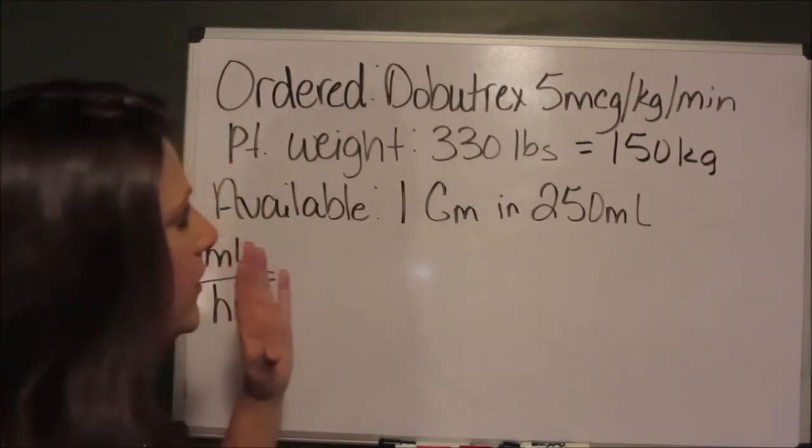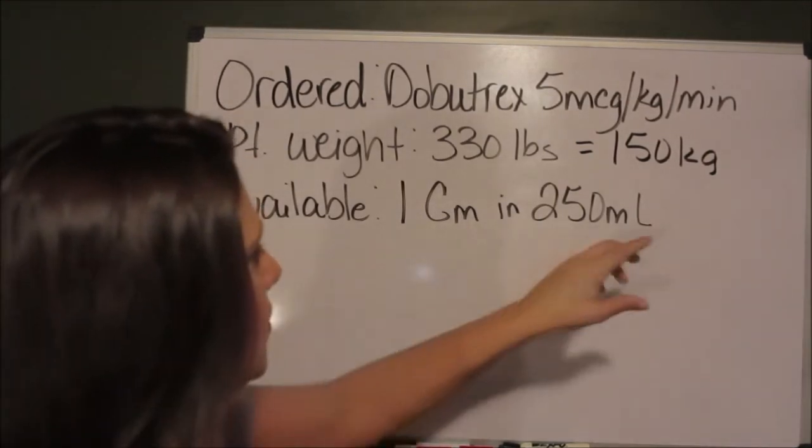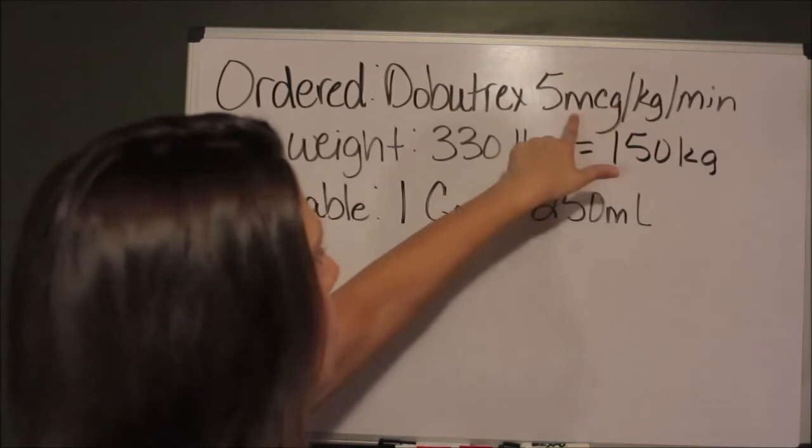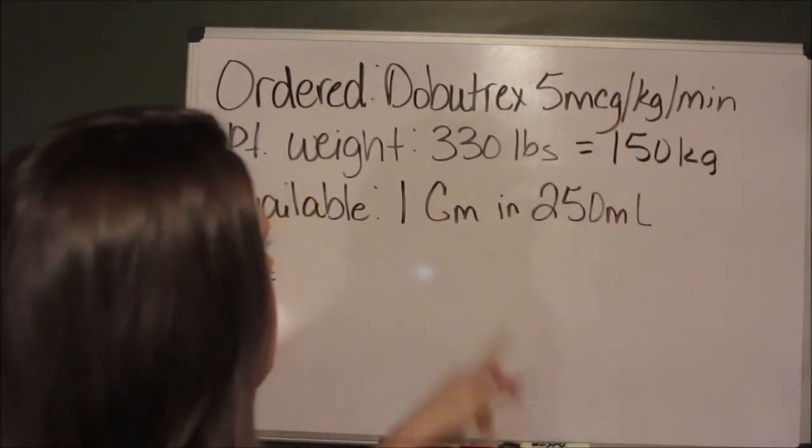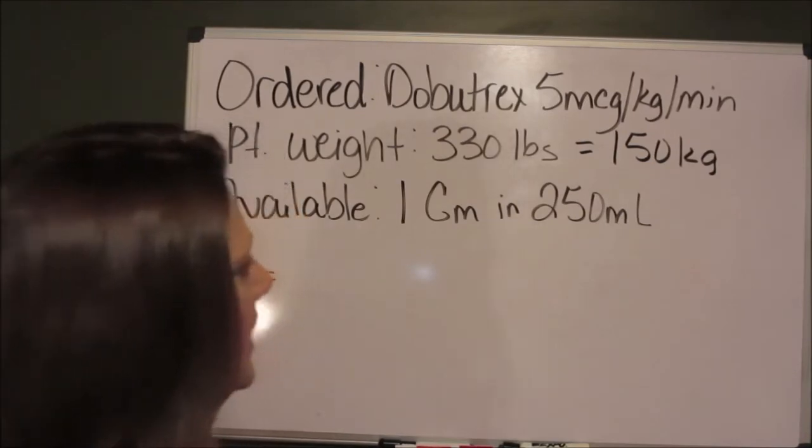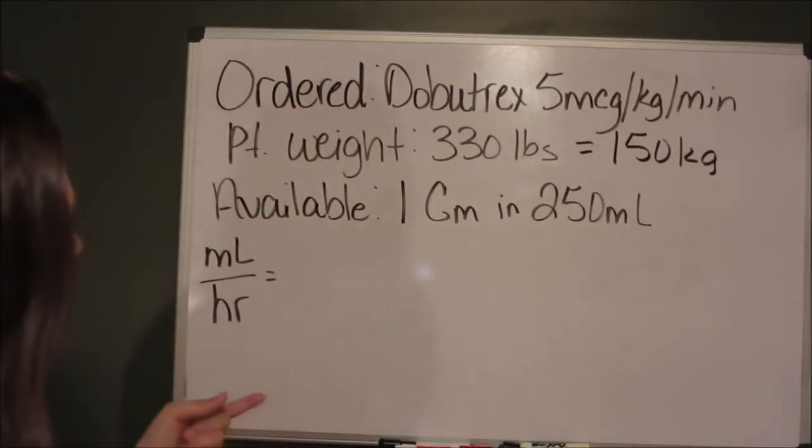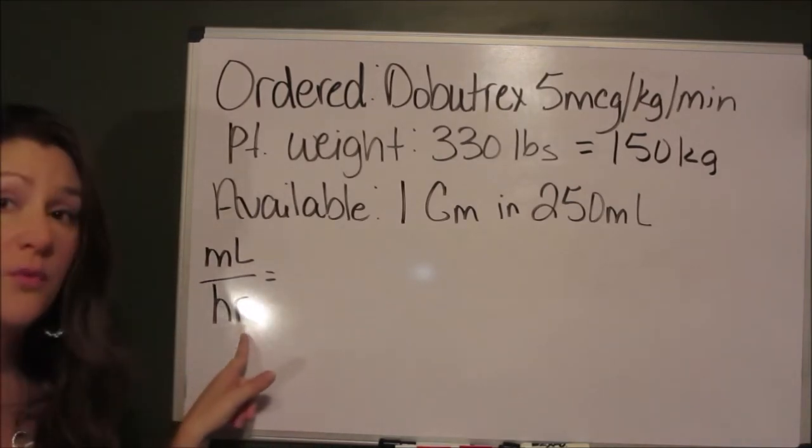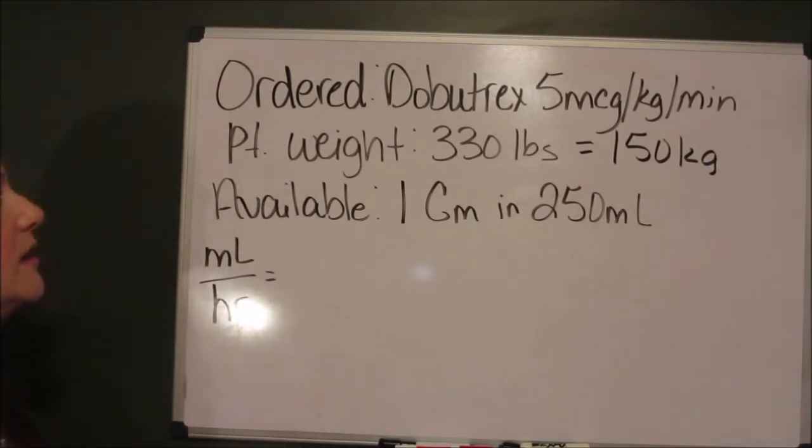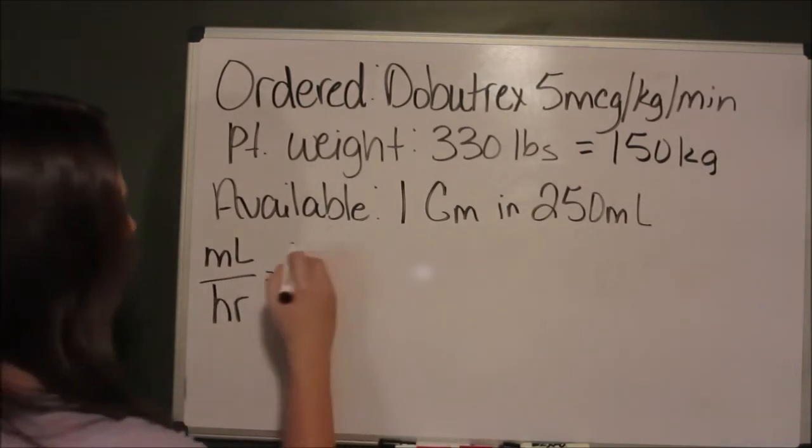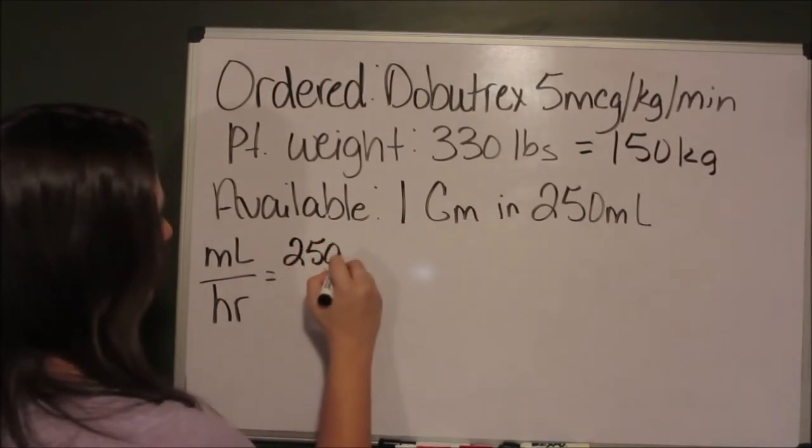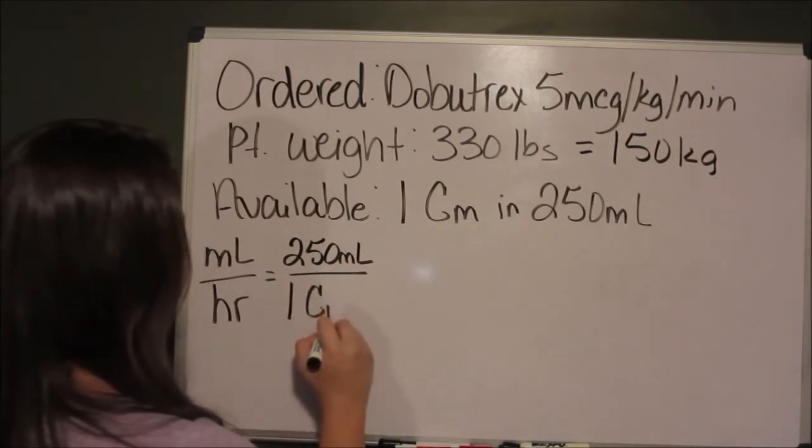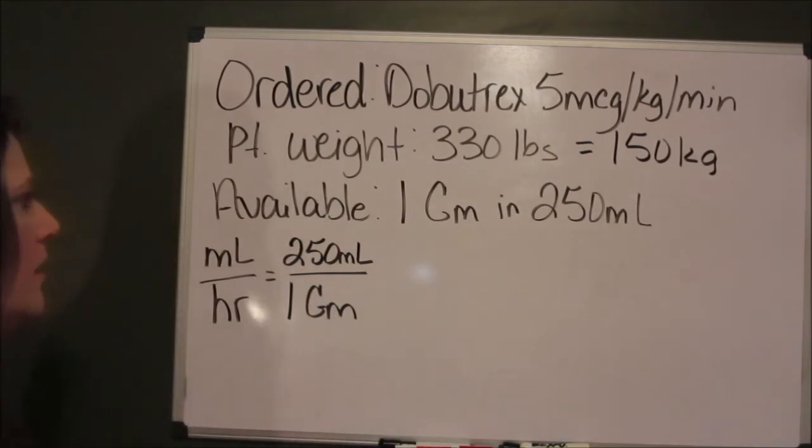So with weight based calculations, first you're going to want to go ahead and get your pounds converted to kilograms. Because as you can see, it's micrograms per kilogram per minute. So the patient weight is 150 kilograms. Again, we're looking for an IV infusion over an IV pump, so we're looking for milliliters per hour. So you want to start with putting your milliliters on top, which is the 250 milliliters. That has 1 gram of Dobutrex.